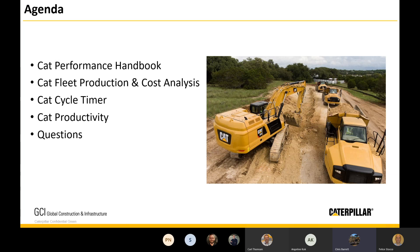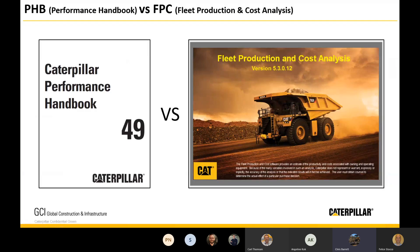Let's go through some quick 101s on how to use that performance handbook. We'll then get into a tool also known as FPC, cover off later on an application you can use on your smartphone — the CAT Cycle Timer — and a new application to bring all this payload data and productivity data together in our new online application, CAT Productivity. So let's have a look at a bit of a job site scenario.